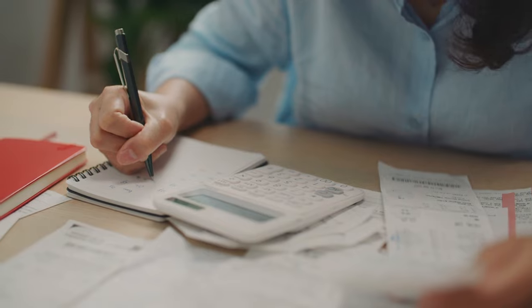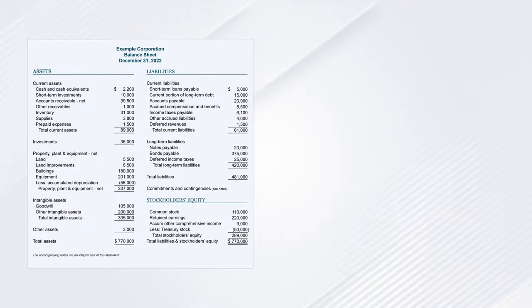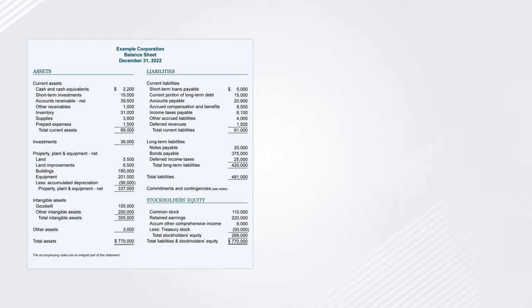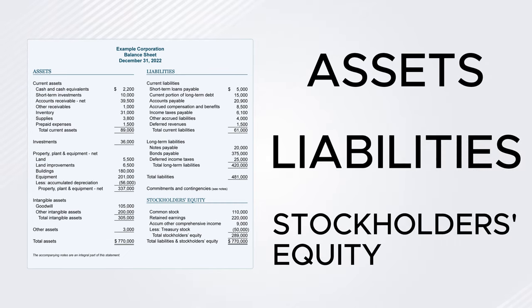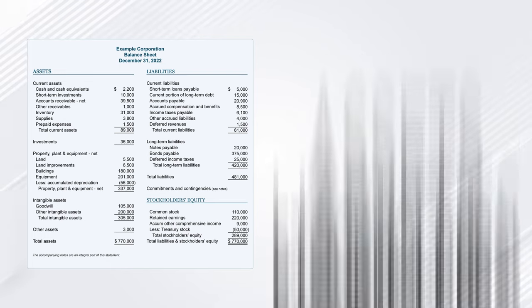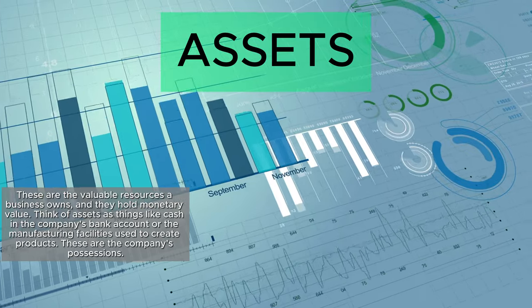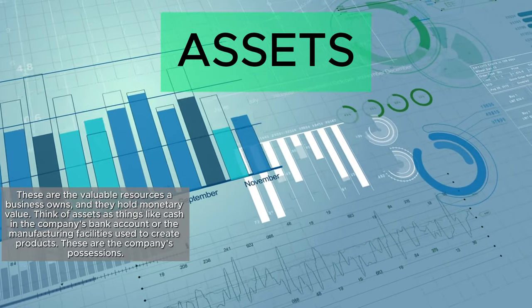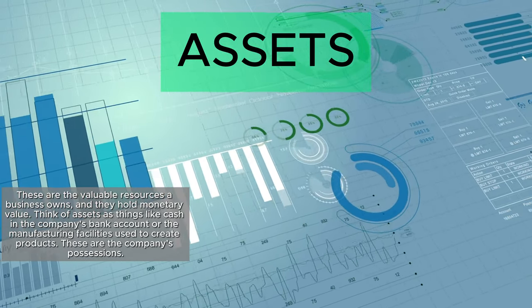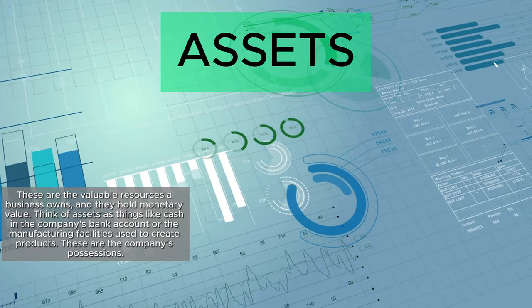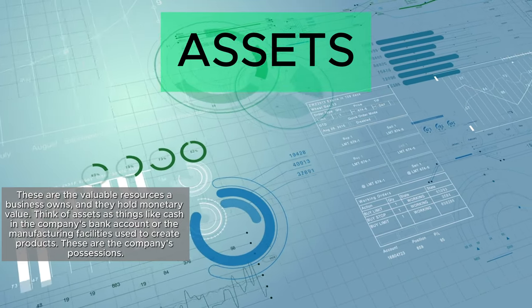Let's break down the fundamentals of a balance sheet step by step. A balance sheet is divided into three primary sections: assets, liabilities, and stockholders' equity. Assets are the valuable resources a business owns, and they hold monetary value. Think of assets as things like cash in the company's bank account or the manufacturing facilities used to create products. These are the company's possessions.